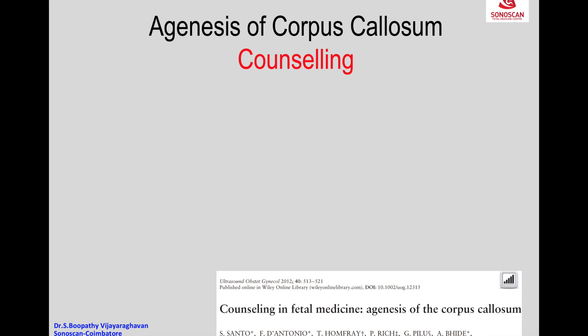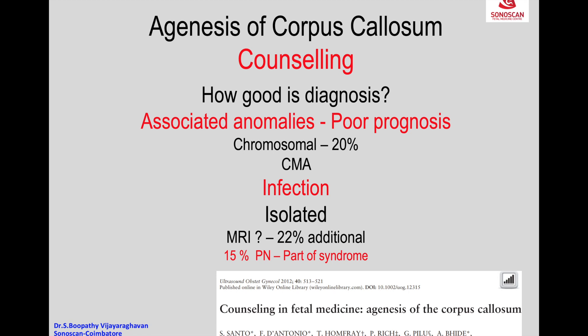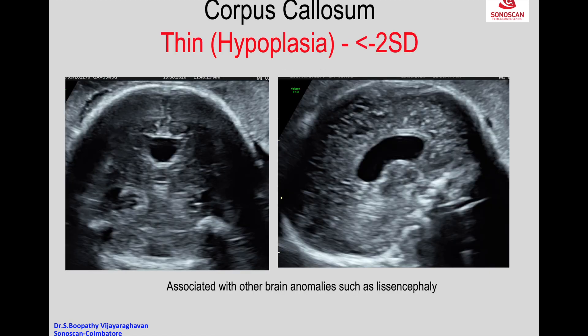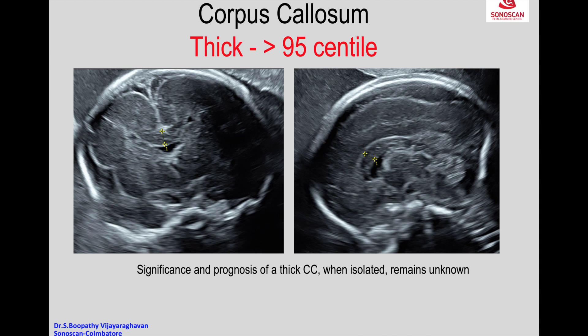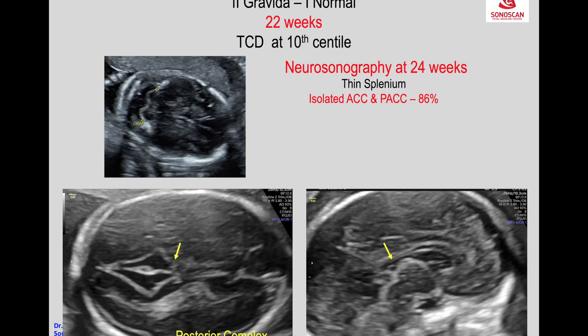Coming to counseling — the patient should be counseled that even though it looks isolated in the prenatal scan, in 15% of cases there are associated findings. You can see that the corpus callosum is very thin, just like a hairline — that is a thin corpus callosum, or hypoplasia of the corpus callosum. It may be associated with significant findings. In isolated partial agenesis of corpus callosum with a thick corpus callosum, 86% of cases have normal neurodevelopment.